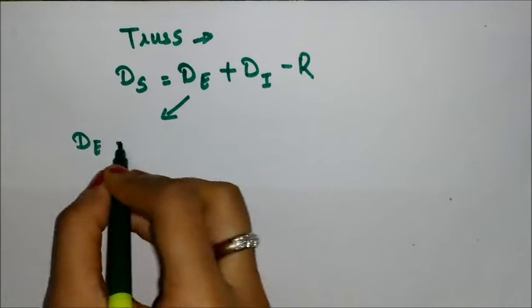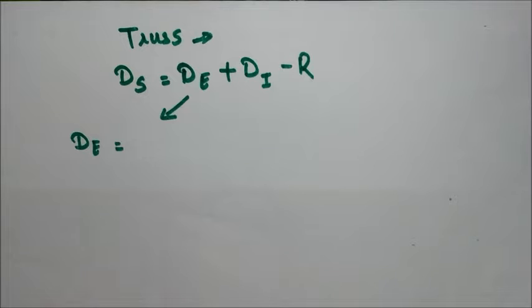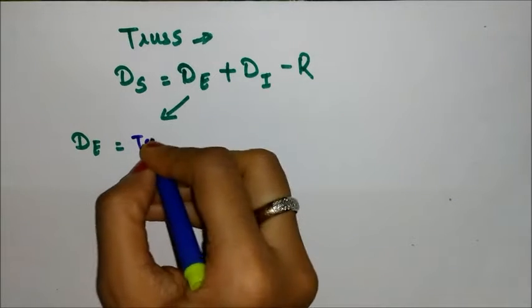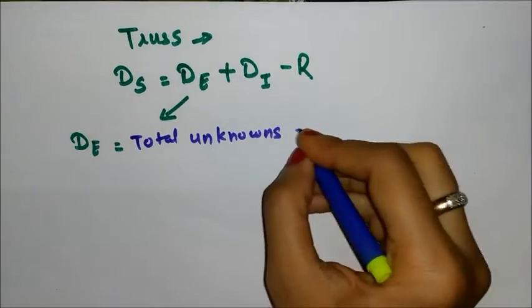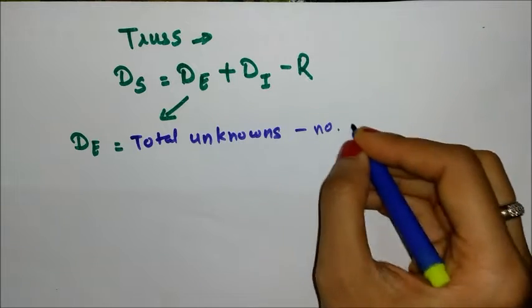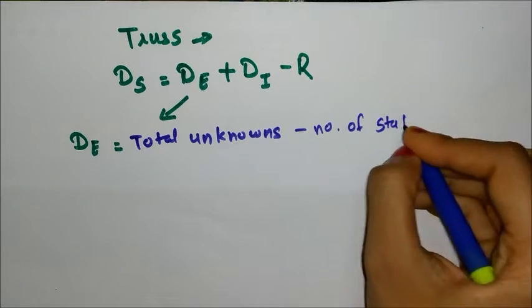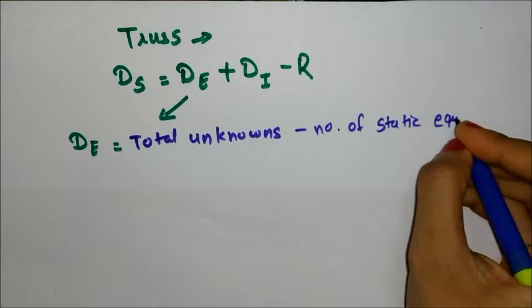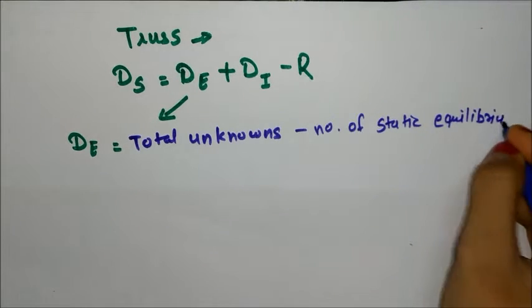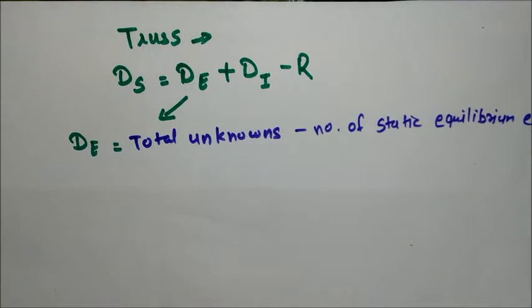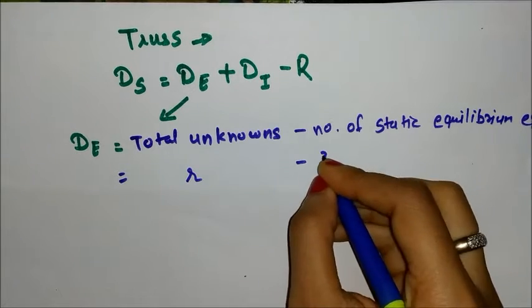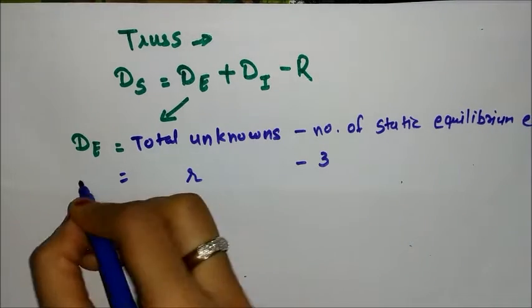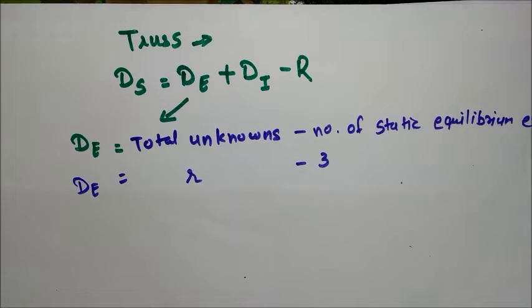Again, the external indeterminacy formula gives you the total unknowns minus the number of static equilibrium equations. If it is a 2D structure, then there are 3 equilibrium equations, so the formula for DE will be r minus 3 for 2D structures.